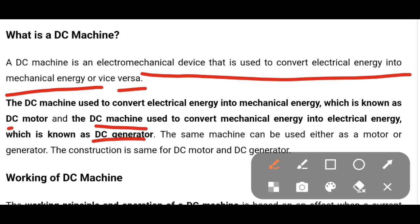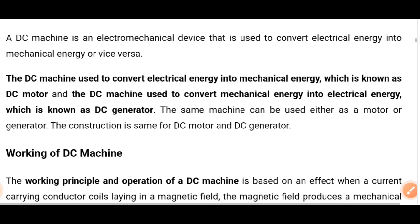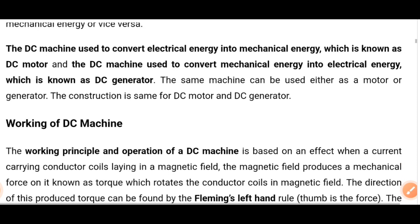So DC machine has two types: DC motor and DC generator. Both work on DC power, so the machine is known as a DC machine. The same machine can be used either as a motor or a generator — the construction for the DC motor and the DC generator is the same.